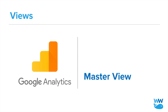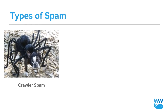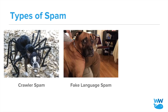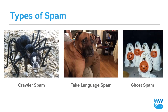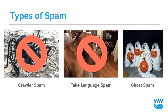Spam could be classified in three ways: crawler spam, fake language spam, and ghost spam. We could copy-paste filters to block crawler and fake language spam, but custom configurations must be made to remove ghost spam. Ghost spam never actually crawls your site — instead, it sends fake data directly to the GA server.